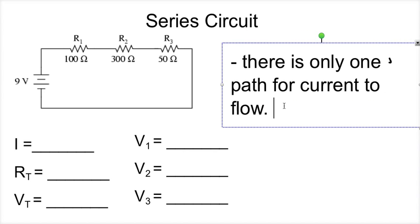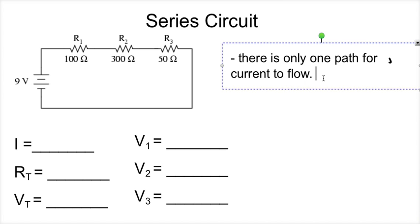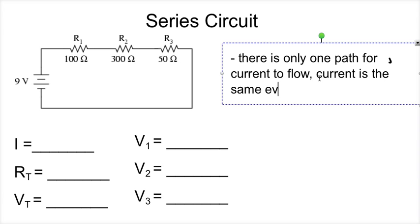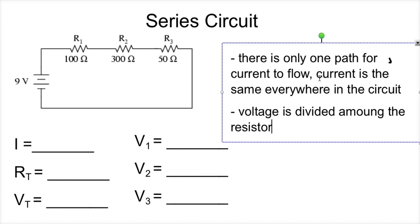In a series circuit, a couple things are true. One, there is only one path for current to flow. That's why the current is the same everywhere in the circuit. And two, the voltage is divided among the resistors.